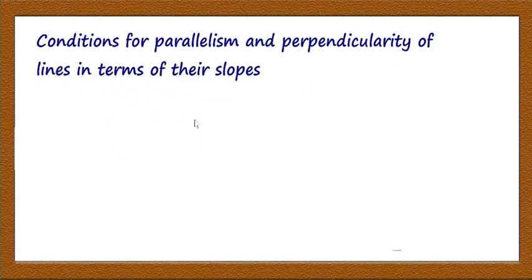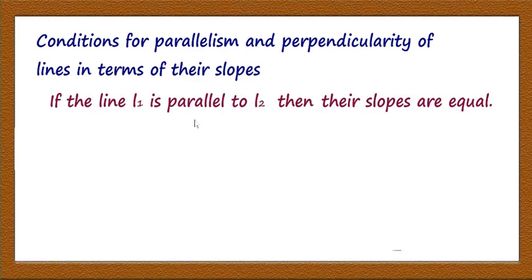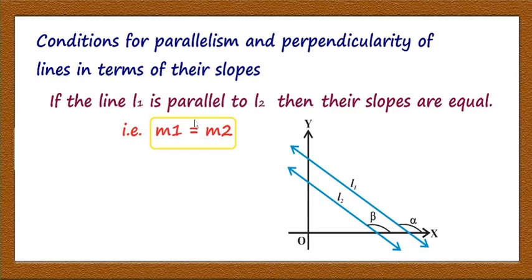Now we will look at some other results on the slope of lines — the condition for parallelism and perpendicularity in terms of their slopes. If two lines are parallel, the angle of inclination of both lines with the positive direction of x-axis will be the same. Suppose the angles are alpha and beta; if the lines are parallel, then alpha = beta.